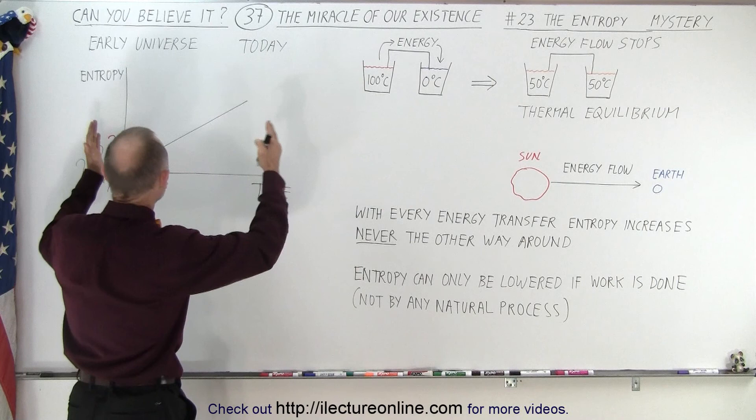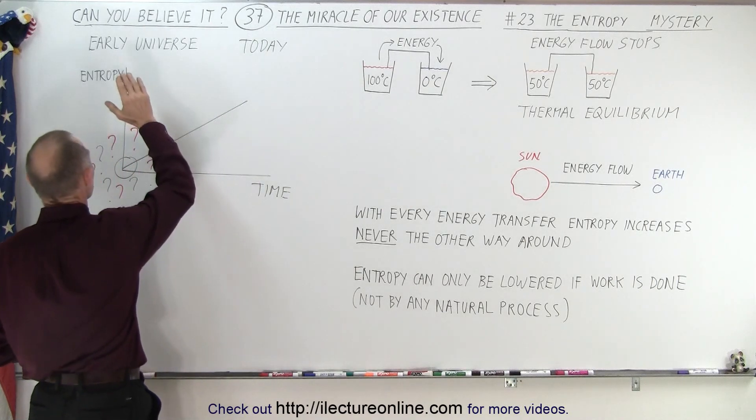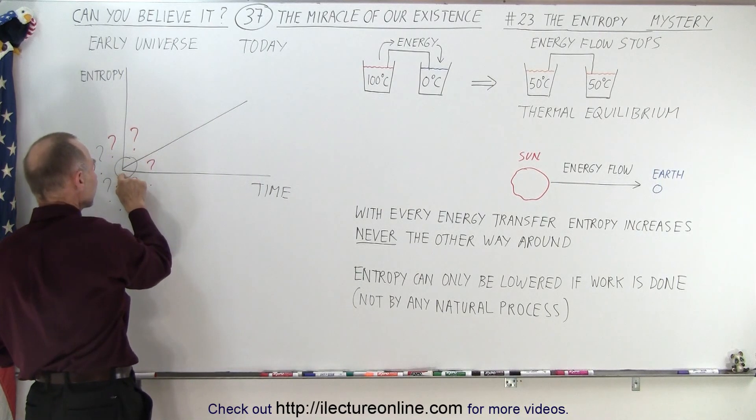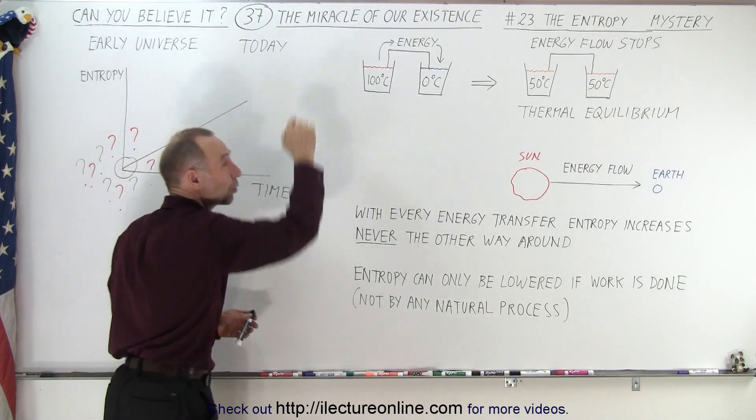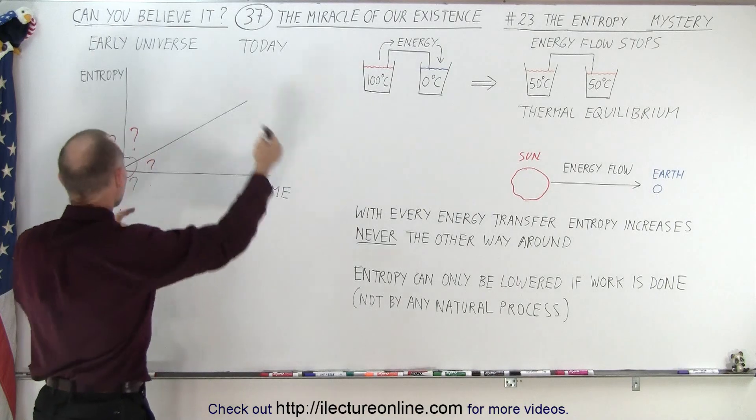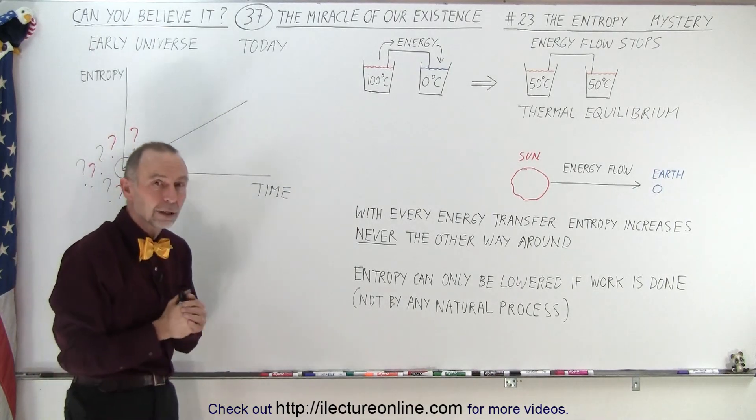So when we take a look at the history of the universe, long time ago, entropy was very low. Today it's very high. It'll just continue to go high and there's no way in a natural process to get the entropy to be low.